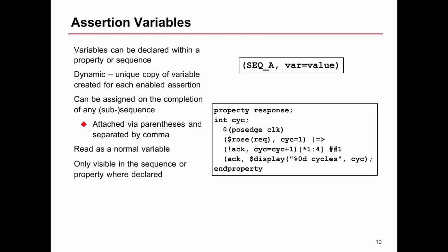In this example we've got a property called response, and it declares one single local variable called int cyc. We can define as many local variables as we wish, in this case we only have one.